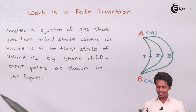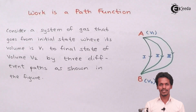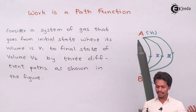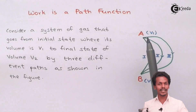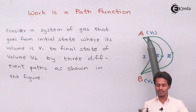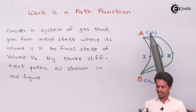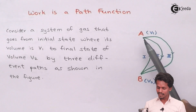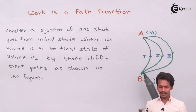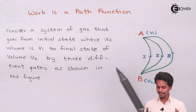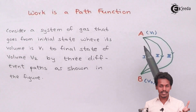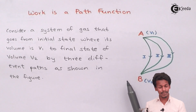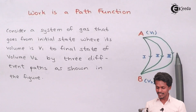These are the paths mentioned in this diagram. The initial state A has a volume of V1, and the final state B has a volume of V2. There are three paths shown: path 1, path 2, and path 3, each representing a different way the system can go from V1 to V2.